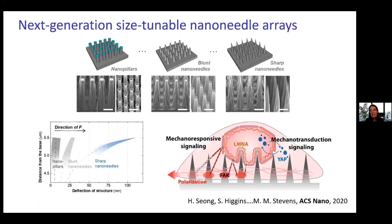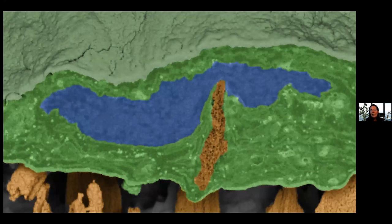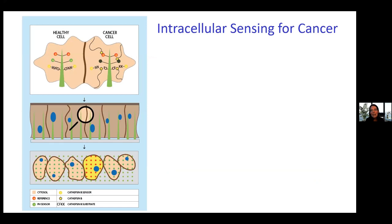Heijong has gone on to make many different types of these needles, with really interesting mechanotransduction properties and influences on how cells differentiate. We can also use these needles for biosensing — one of the things we were interested in is how we can interface these needles with cancer cells and measure differences between cancer cells and healthy cells, given known differences in pH and intracellular enzymatic activity.